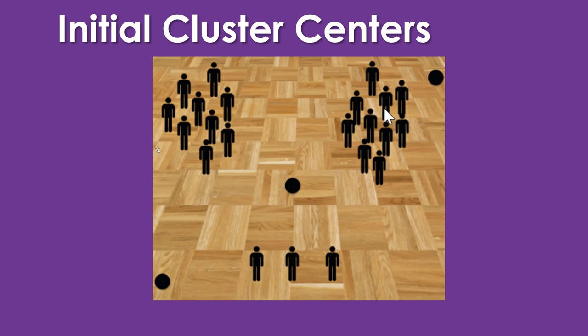We're going to let the computer do this analysis. The computer has to start somewhere, so it starts by placing three dots into the gym — because we want to do a k equals 3 k-means analysis. It randomly places the centroids, which represent the center of each group.